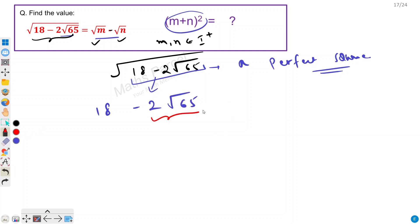Now the hint would come from this term. Here we have a minus sign so this will most likely be a perfect square of the form (a-b)². So a² + b² - 2ab. This term would be mapped to 2ab and this a² + b² would be mapped to 18.